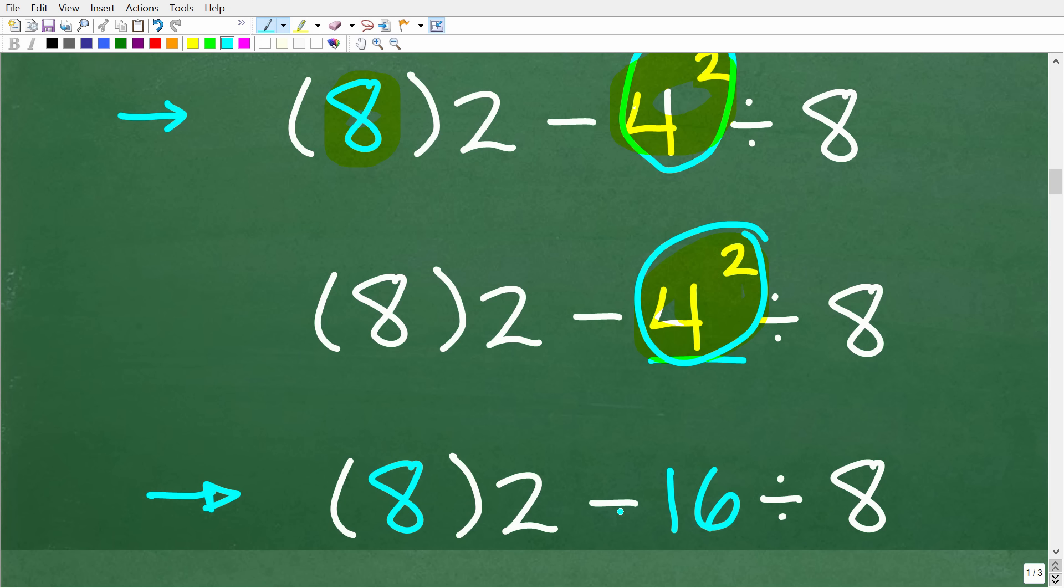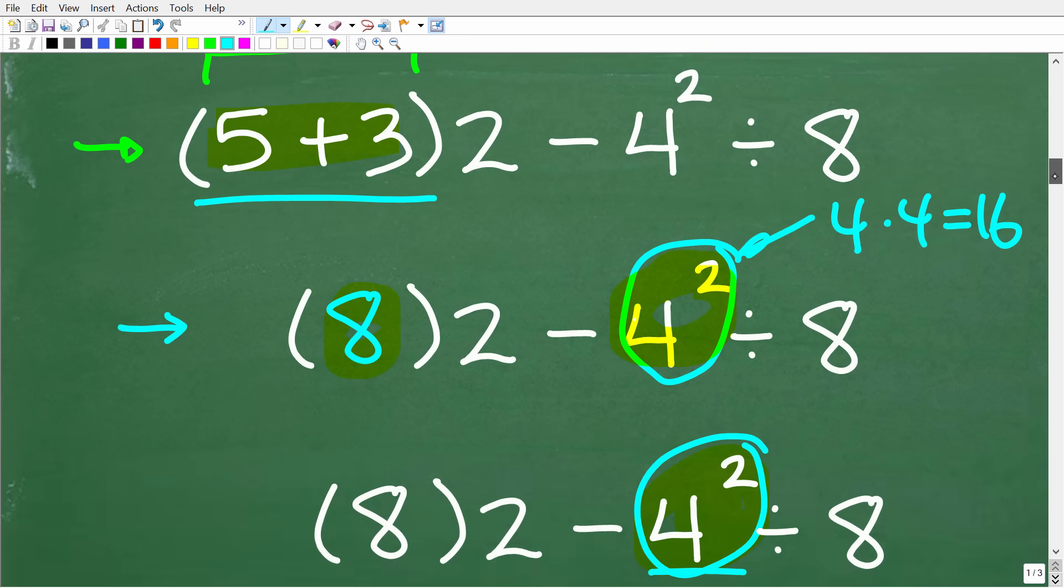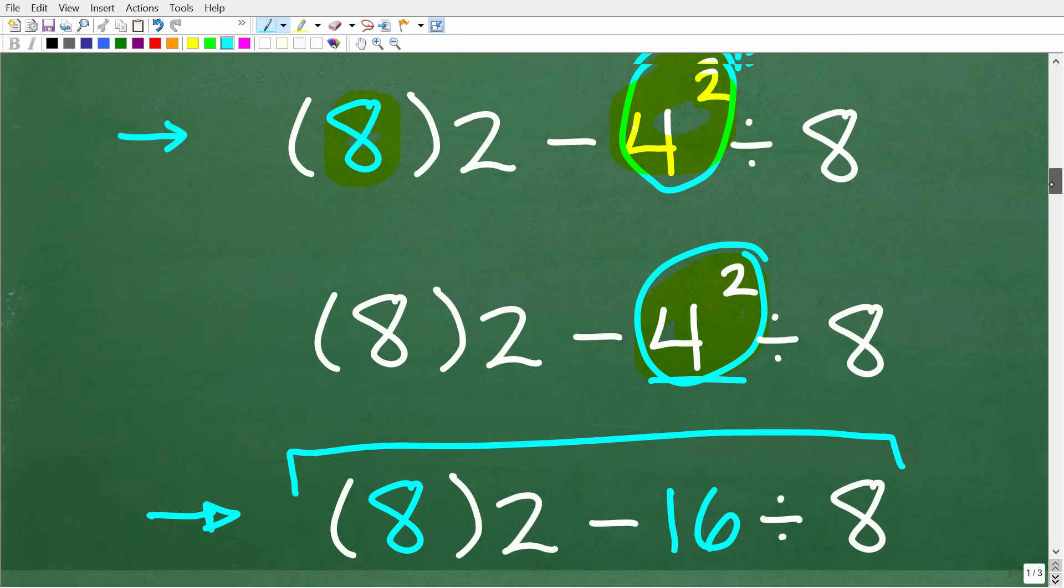So we're going to do this step. And instead of four squared, we're going to have a 16. So this is our problem right here. Okay, so we have eight times two minus 16 divided by eight. So to finish this problem up, you have to keep referencing this PEMDAS checklist. So we're going to take the rest of these steps in just one second.